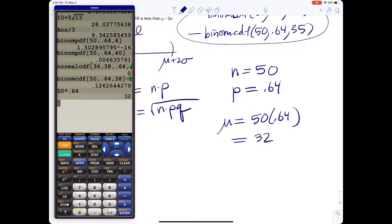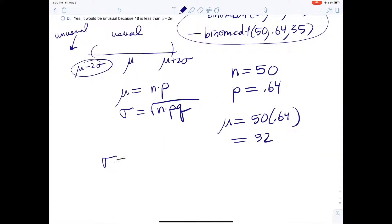The standard deviation, square root of, actually n, there's an n P in there. So I can just say 32 times, or Q is going to be 36. The opposite of 64 is 36, the complement, actually.